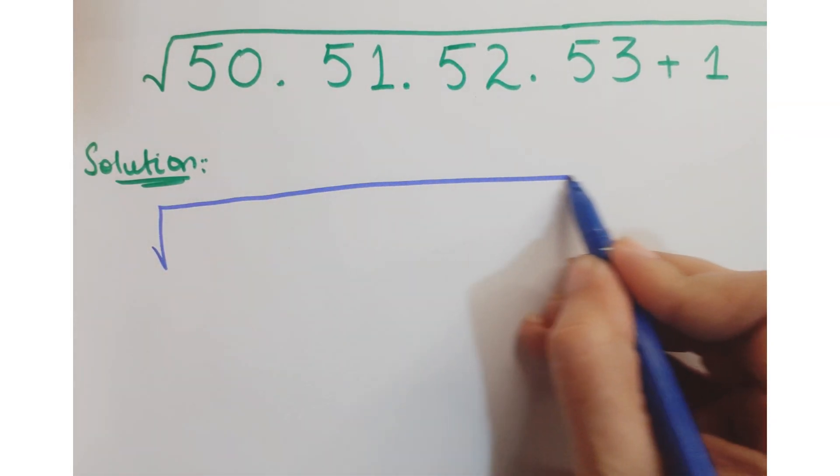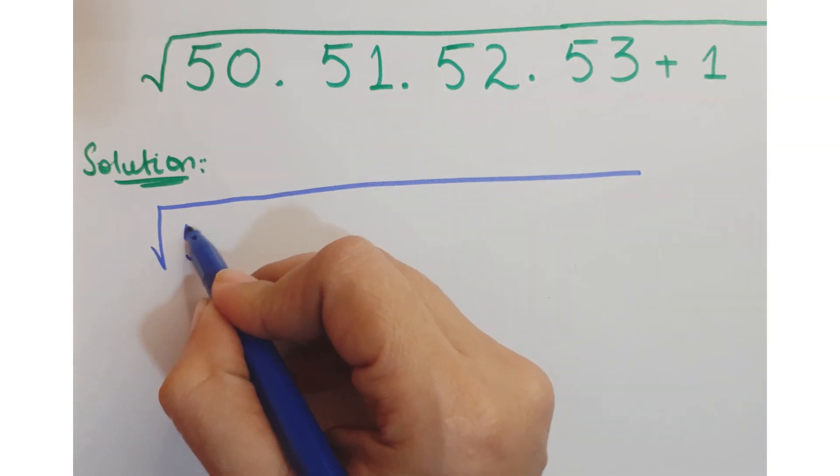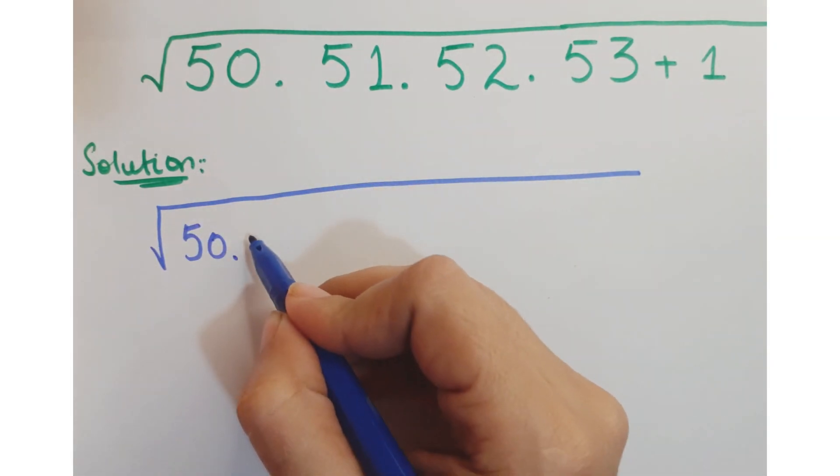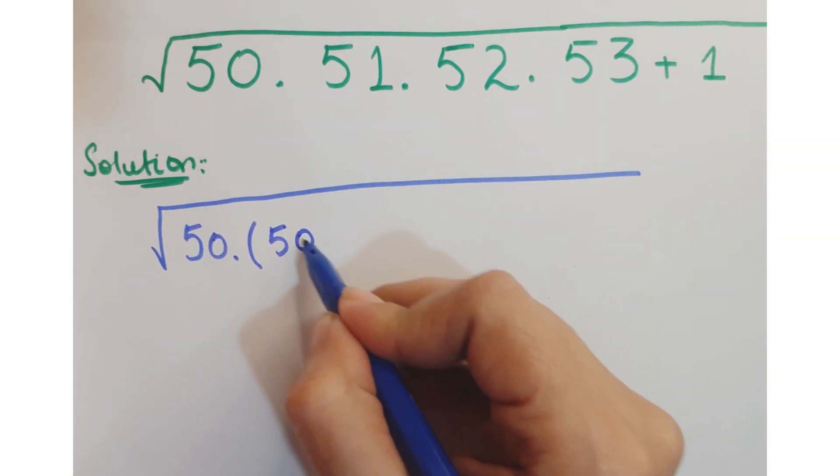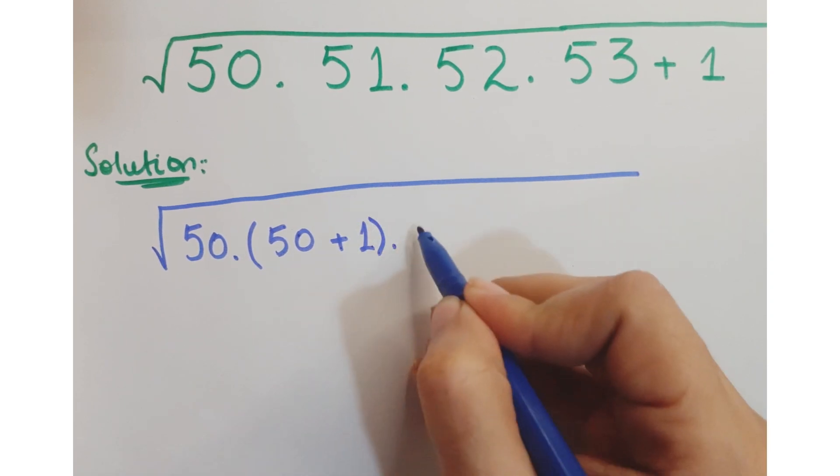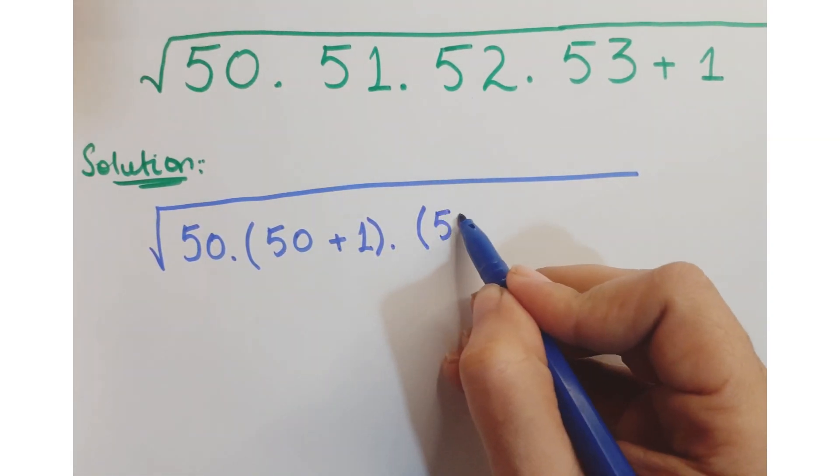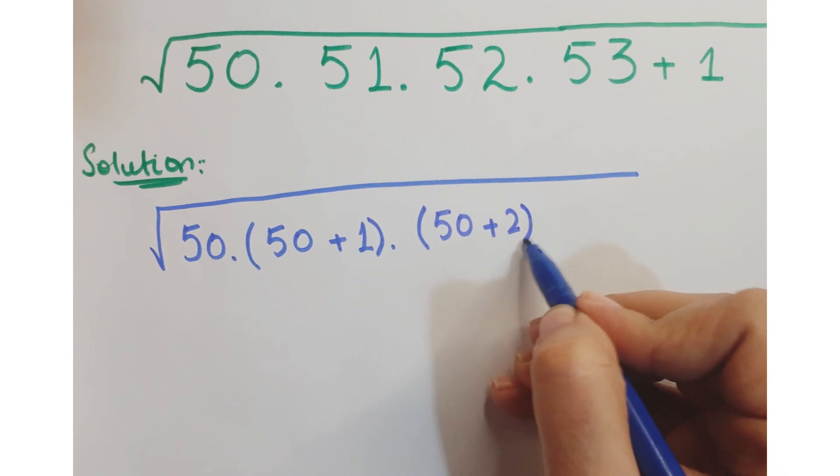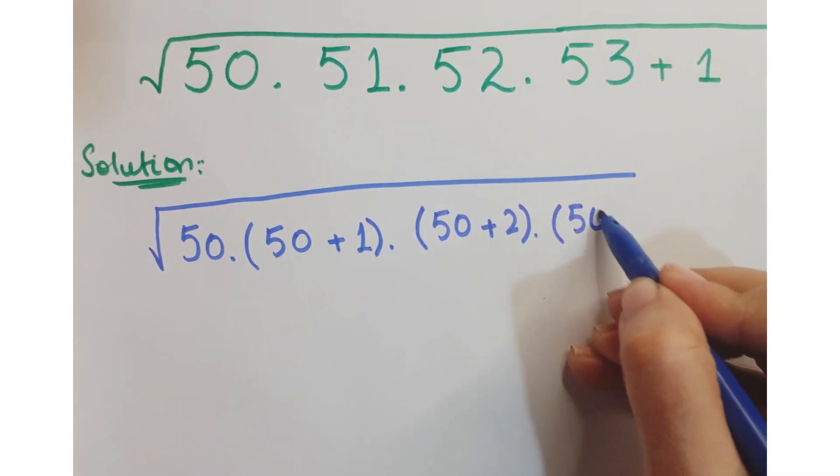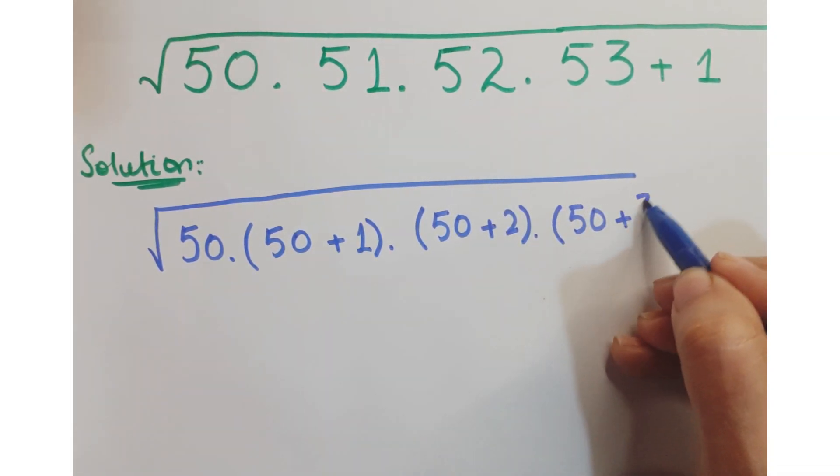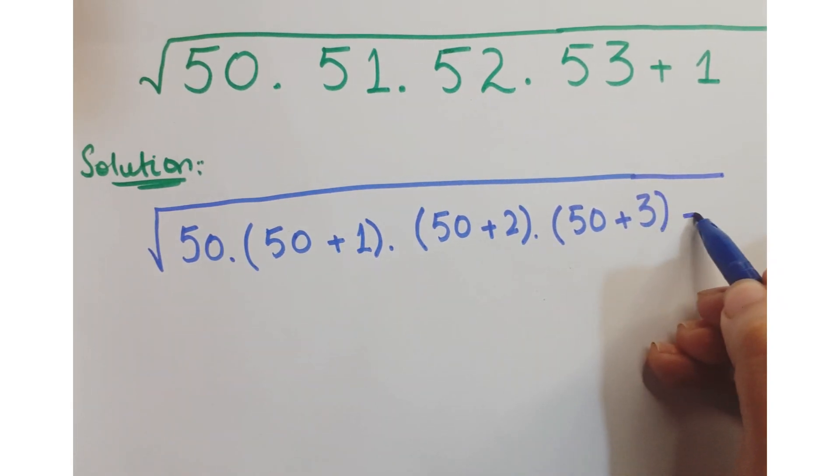First of all, we can write this 50 as it is. Now, this 51 can be written as 50 plus 1, into 52 can be written as 50 plus 2, into 53 can be written as 50 plus 3, plus 1.